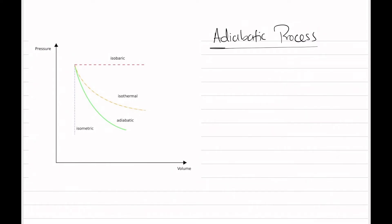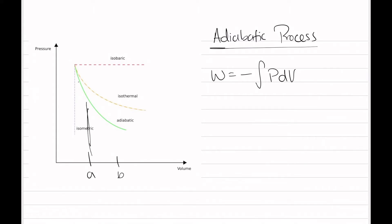Now let's calculate some work. Let's say we choose this adiabatic process. We know that the work is equivalent to the negative integral of P dV. Let's say we're going from A to B, so we're essentially going to try to find the area under this part of the curve. As we can see, the pressure changes, so let's write pressure in terms of volume.